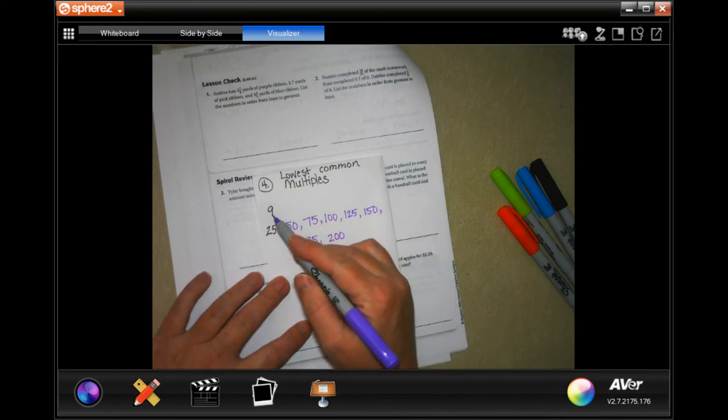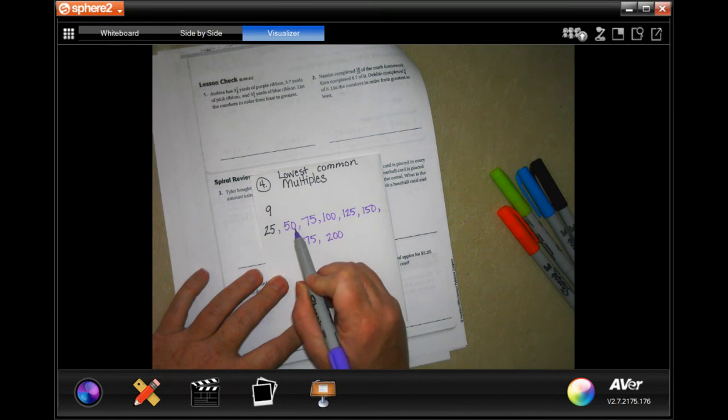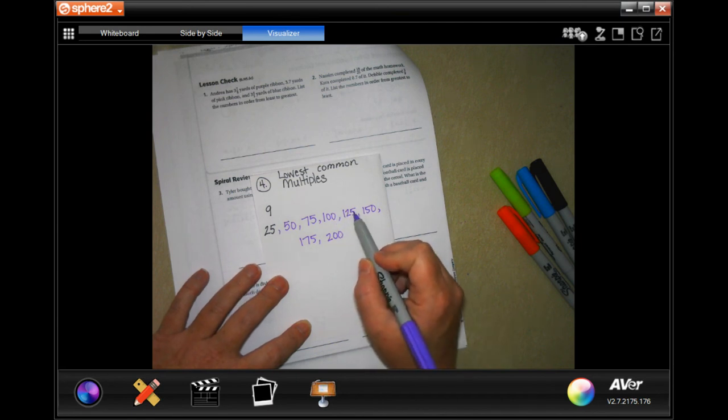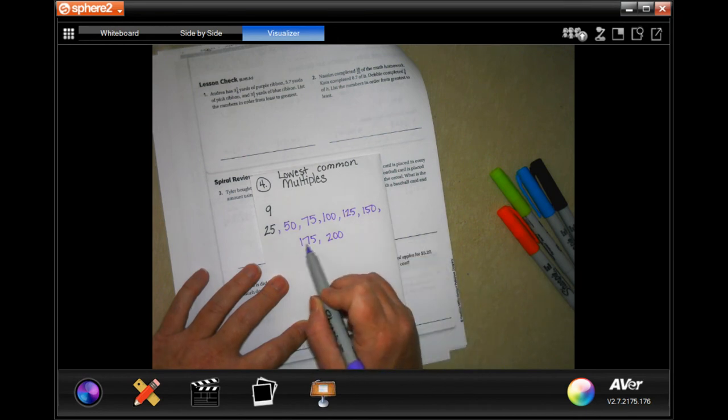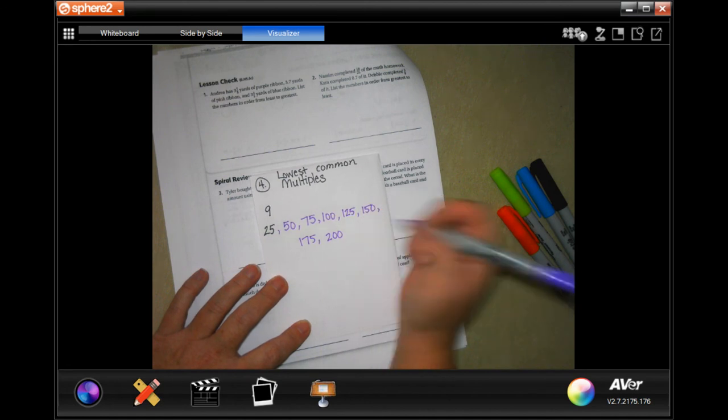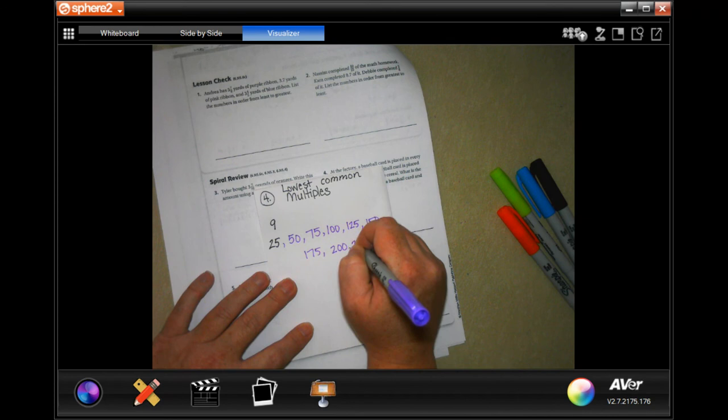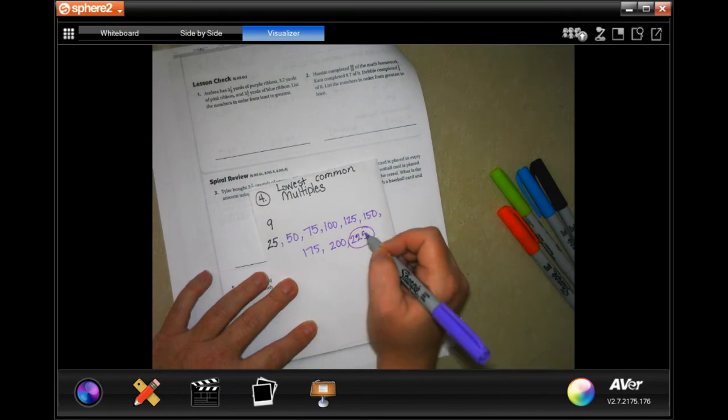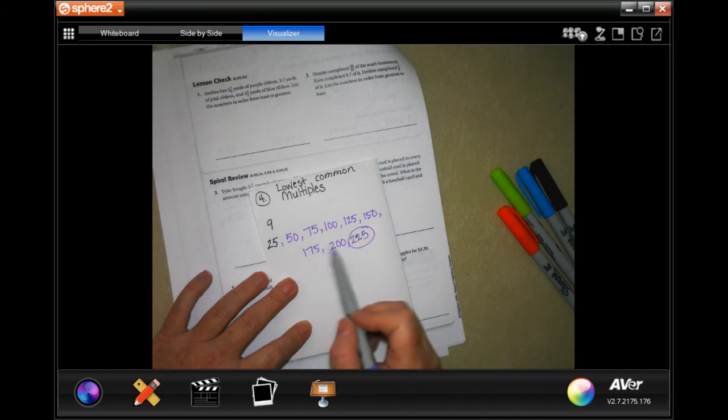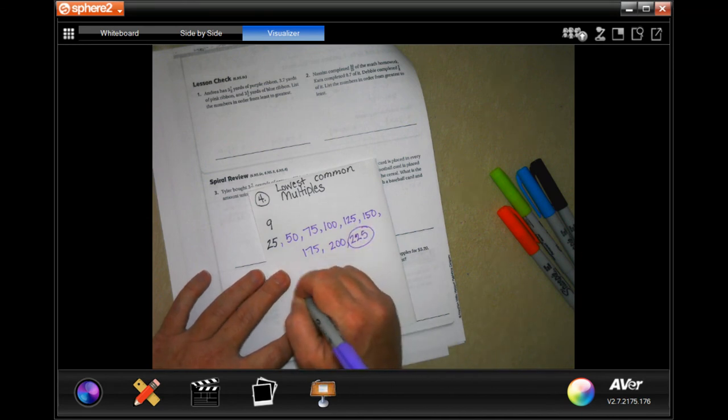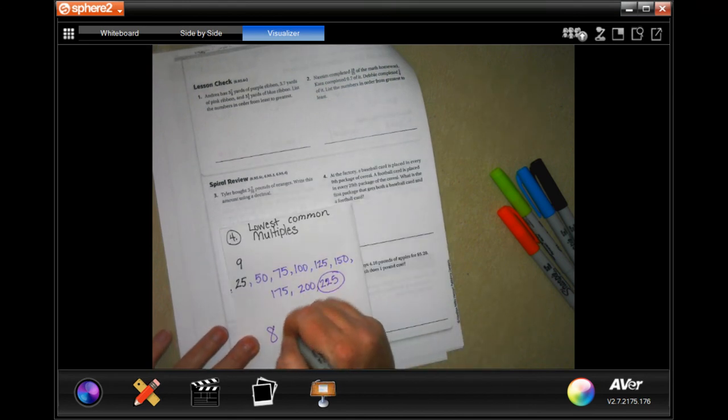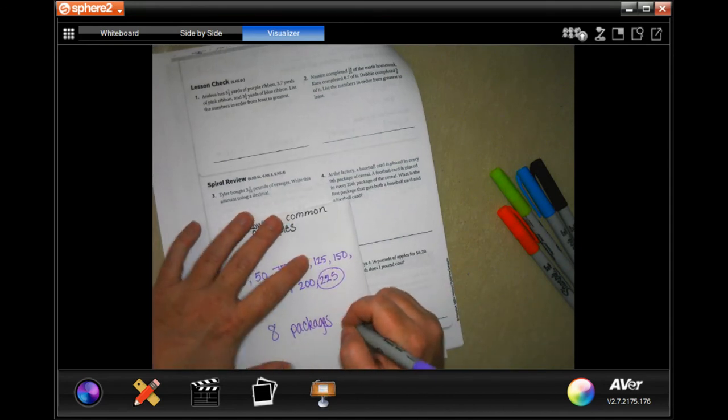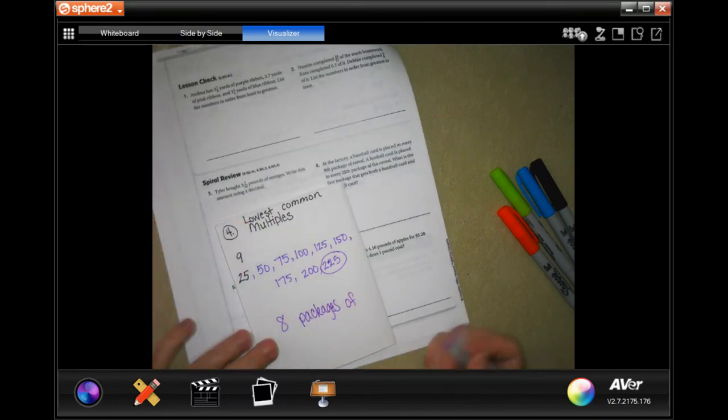But I know that all of my multiples of 9, they add up to 9. So, 5 plus 0, that's not 9. 7 plus 5 is 12, that's not 9. 1 doesn't add up. 1 plus 2 is 3 plus 5 is 8. That's not going to happen. That's 6. That's not going to happen. That's not going to happen. Oh my goodness. We're going to have to keep on going. 2 plus 2 is 4 plus 5 more is 9. So, it's going to be 1, 2, 3, 4, 5, 6, 7, 8 packages or 8. Yep, 8 packages of football.